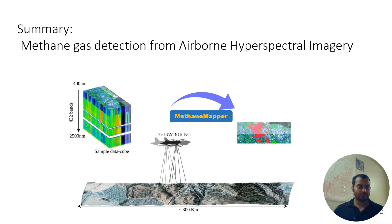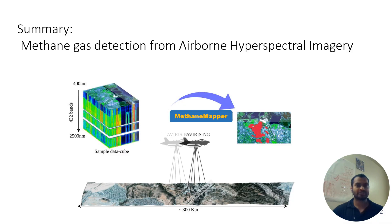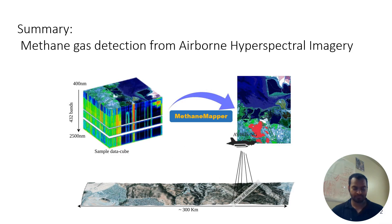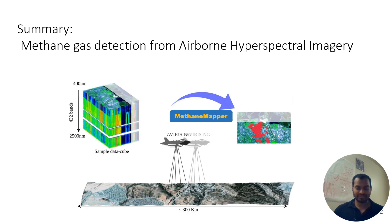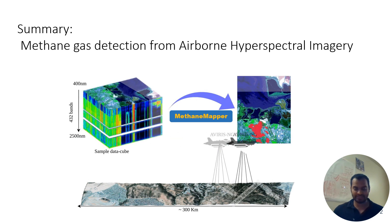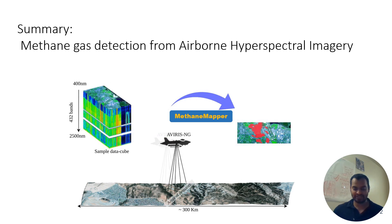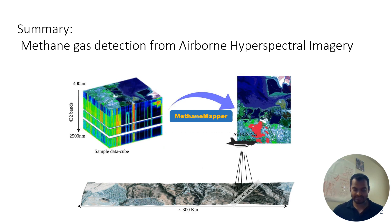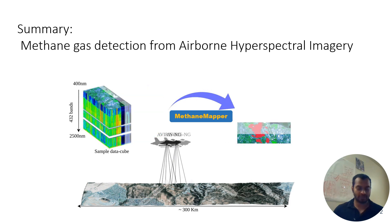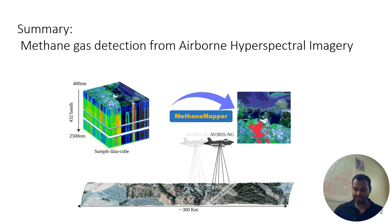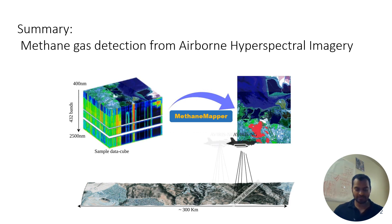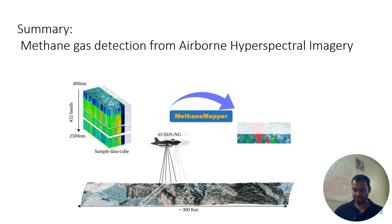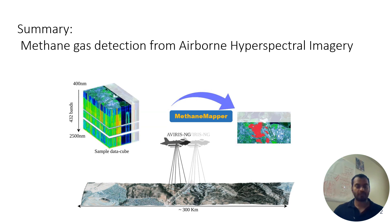In this work, we are doing methane gas detection from airborne hyperspectral imagery, shown with a sample data cube. The Methane Mapper processes that hyperspectral data cube and generates a segmentation mask, as shown in red in the right-hand side image. Red represents the methane presence on the ground. The hyperspectral data cube is collected by a sensor named Everest-NG from an airplane.